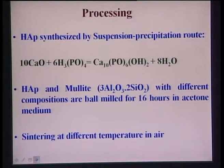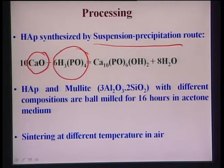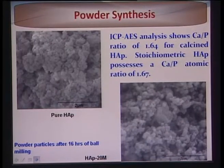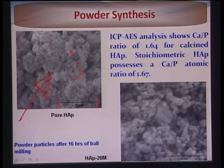In laboratory-scale synthesis, hydroxyapatite can be produced by a suspension precipitation route using calcium oxide and orthophosphoric acid as precursors. Their reaction produces hydroxyapatite. Experiments to improve toughness involved adding mullite to hydroxyapatite. The as-synthesized HA particles are largely spherical, roughly 100 nm in size. Phase purity is confirmed by the Ca/P ratio measured by ICP (inductively coupled plasma atomic emission spectroscopy); a Ca/P ratio of 1.67 indicates phase-pure hydroxyapatite.